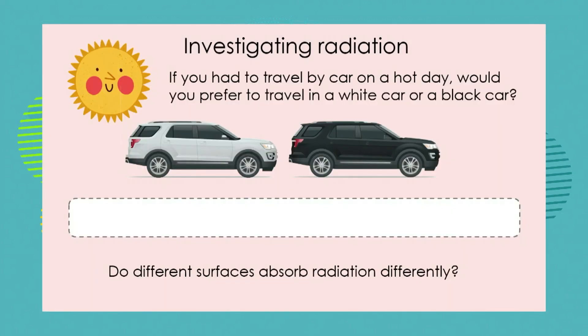So you're off for your day in the Kruger Park — which car are you going to get into? I hope you are running for the white car, making sure it's nice and shiny to reflect as much heat as possible back to the environment, rather than being stuck sweating inside the black car. Do different surfaces absorb radiation differently? Absolutely. Please try it in your garden with ice cubes — ice inside a black container will melt quicker than ice inside the foil or white container.